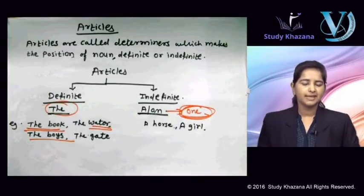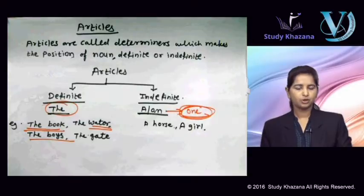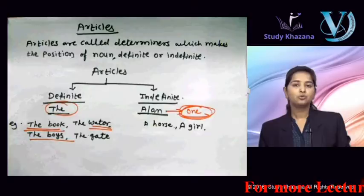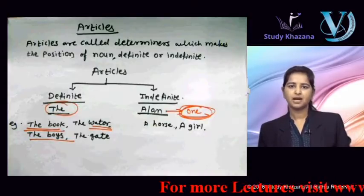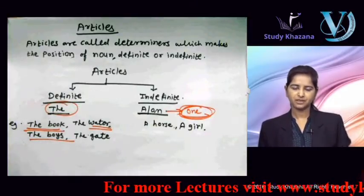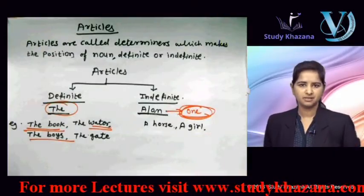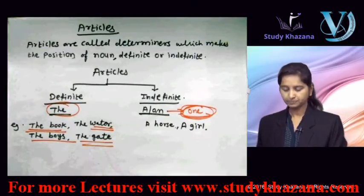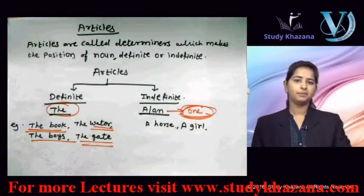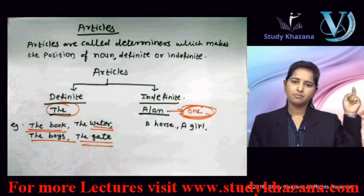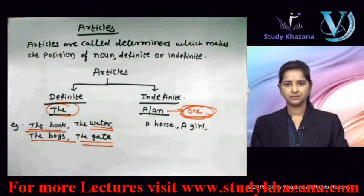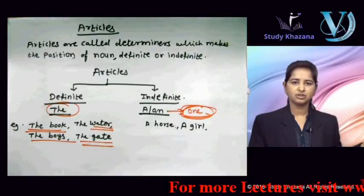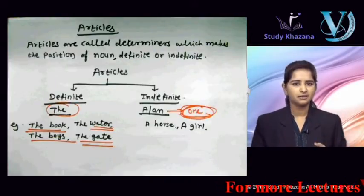Jaise kuch ladke maidan mein khel rahe hain aur woh sare mere dost hain — yeh hume kehna hai. So: 'The boys who are playing in the field are my friends.' Agar next hum kahein 'the gate' — wahi gate jo mere building ka gate hai: 'The gate of my building is pink.' Sare gates nahi — wahi gate jo mere building ko denote kar raha hai. So jahaan jahaan hum specific cheezon ki baat karenge, wahaan hum article 'the' ka use karenge.